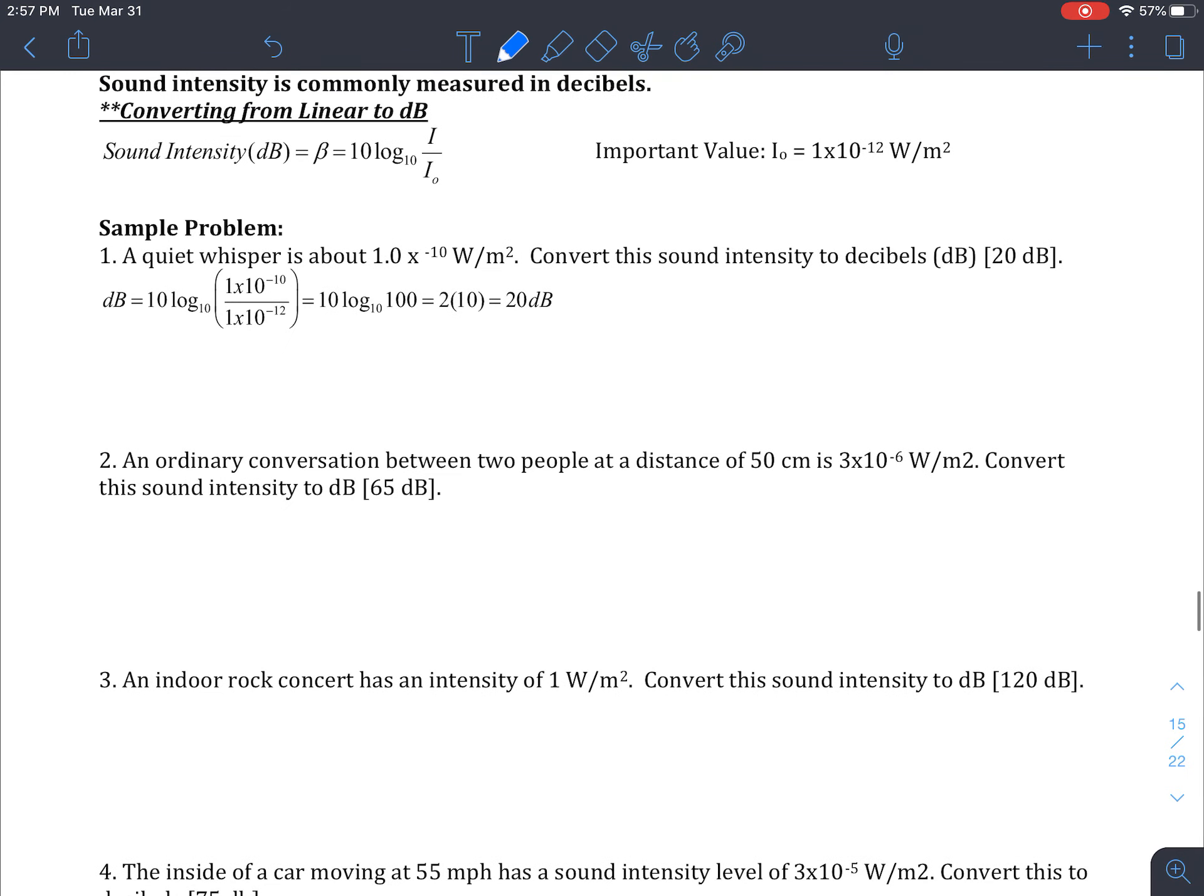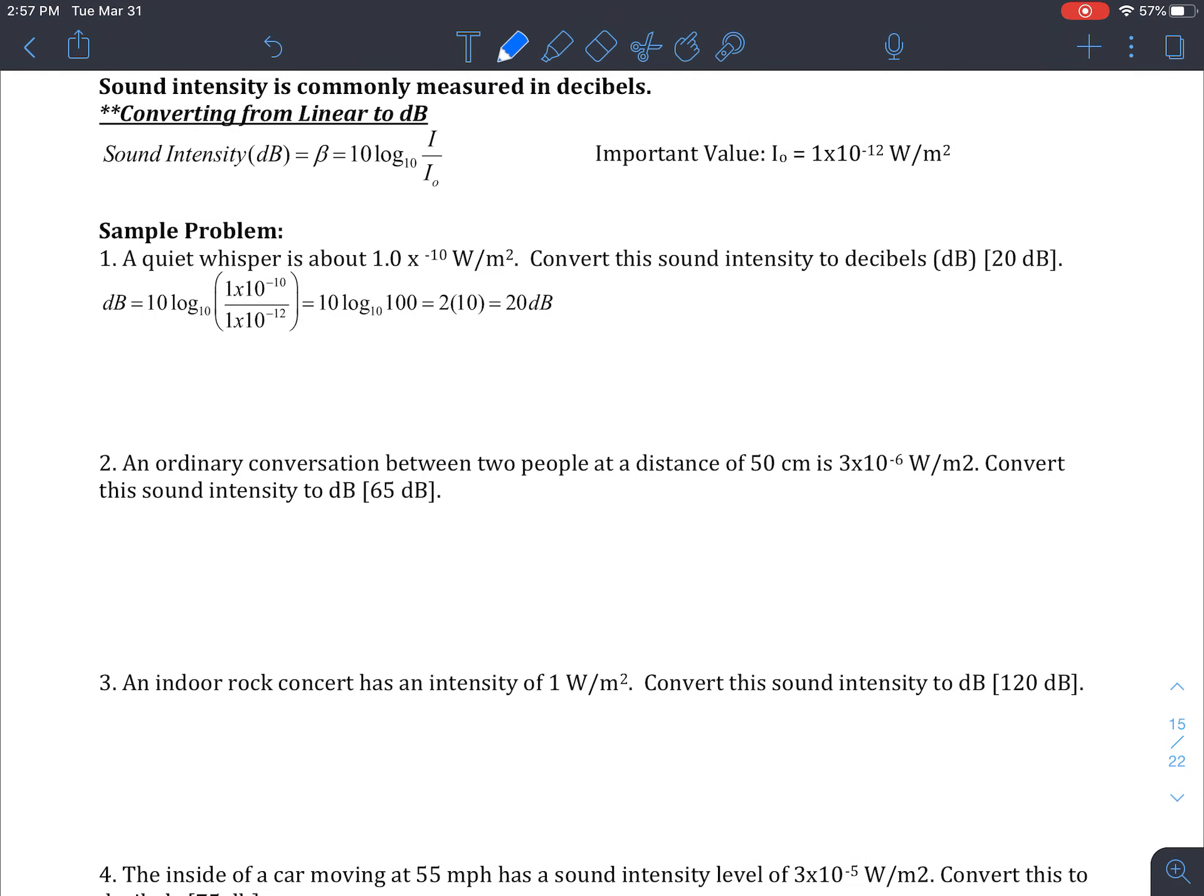So number one is already done for you, so we're going to jump right in. Number two, so we have an ordinary conversation between two people at a distance of 50 centimeters. The 50 centimeters is extra information because we already have the watts per meter squared. So we have that intensity.